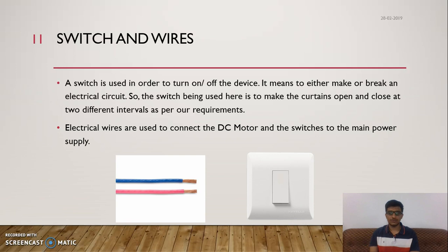A switch is used to break or continue the flow of current — we use switches in everyday life to turn on fans or lights. Wires carry the current from the main supply into the various electrical components. The wires we are using are of basic gauge since this is a small-scale project and we are not carrying 220 volts or any current of that magnitude.